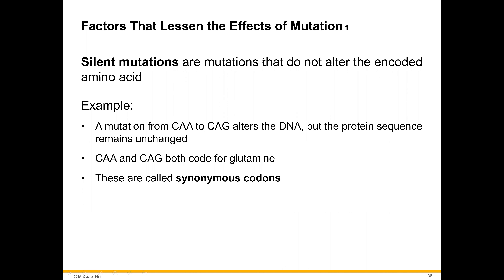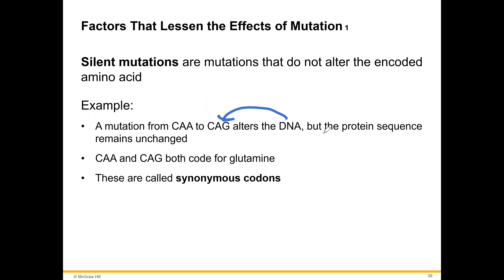Factors that lessen the effect of mutations include silent mutations, which do not alter the coded amino acid. For example, a mutation from CAA to CAG does not change the protein sequence, because both codons code for glutamine. These are called synonymous codons.